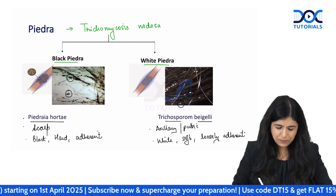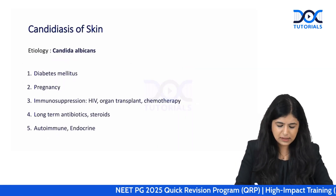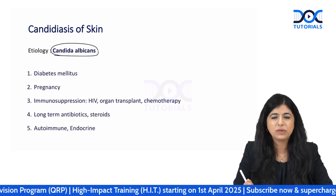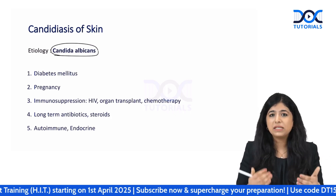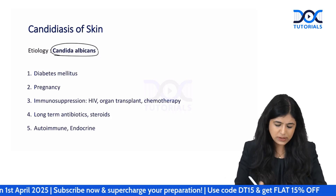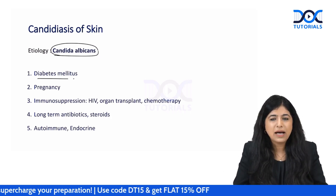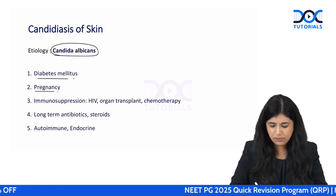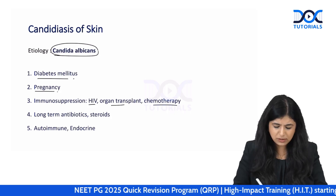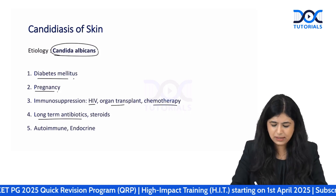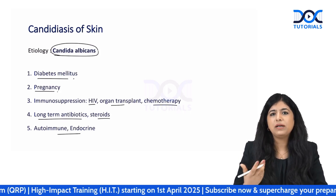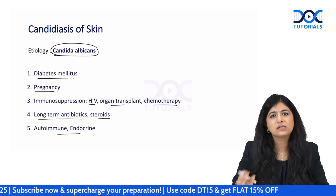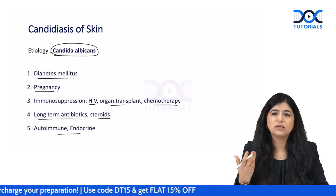Candidiasis is most commonly caused by Candida albicans, which lives as a commensal on the skin and mucosa but can cause disease in certain conditions. Risk factors include uncontrolled diabetes mellitus, pregnancy, HIV, organ transplant, cancer chemotherapy, long-term antibiotics, long-term steroids, and autoimmune endocrinopathy, the last of which can lead to chronic mucocutaneous candidiasis.